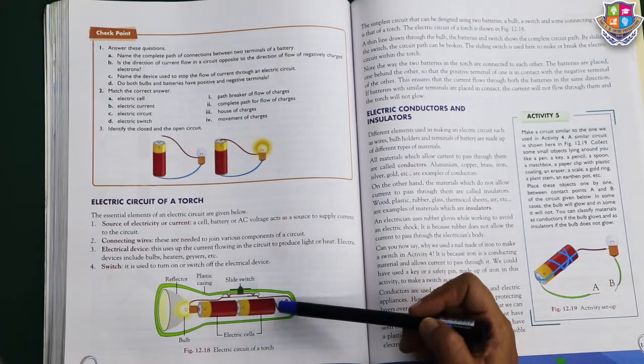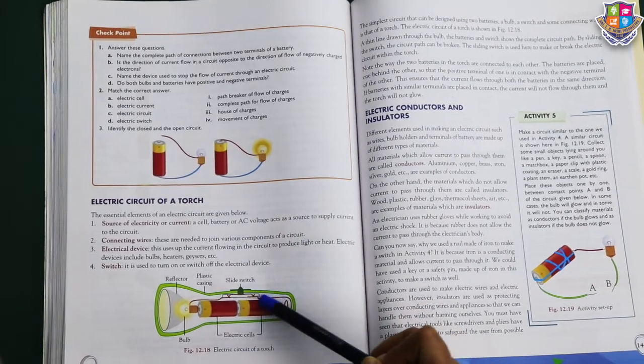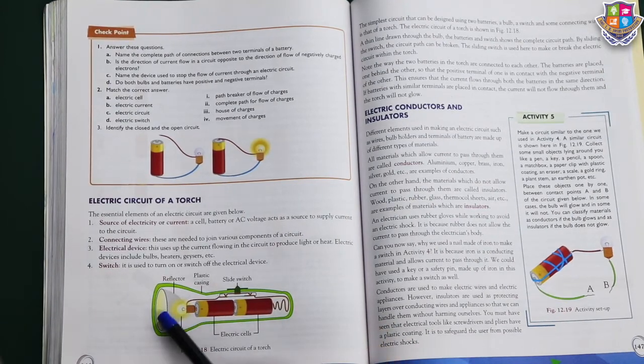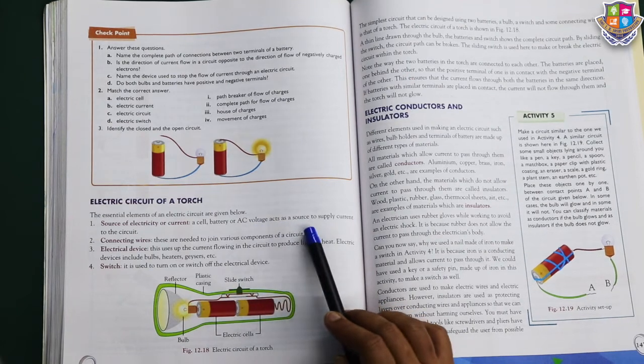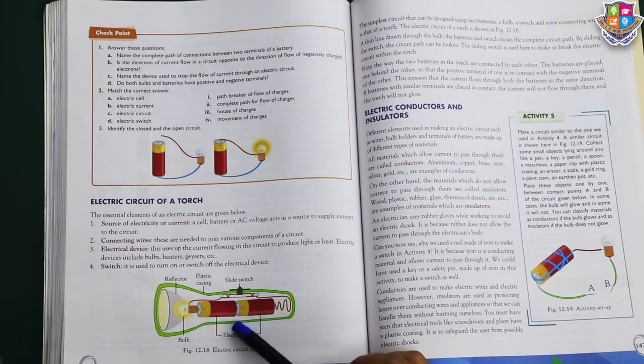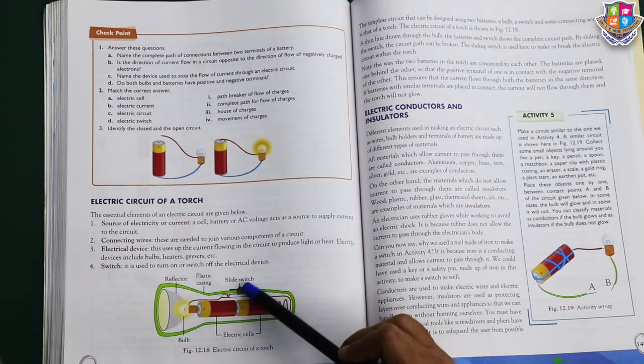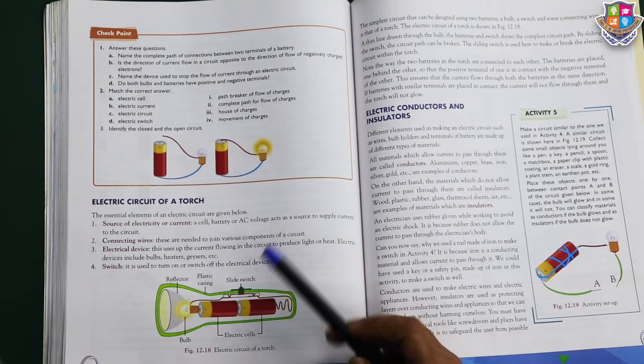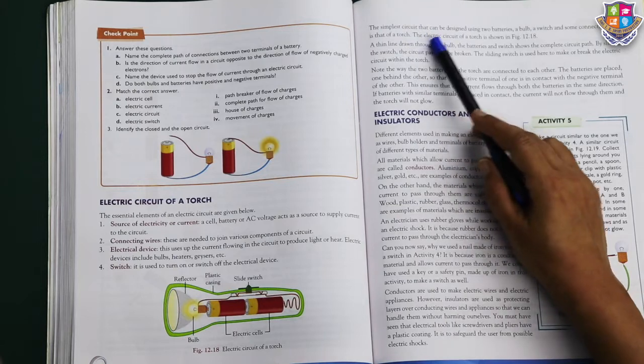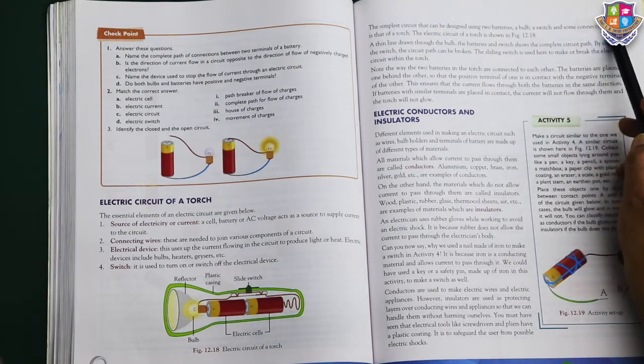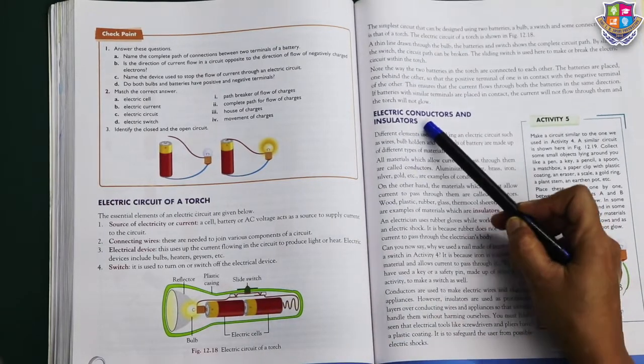Coming to electric circuit of the torch. We have already done this. How we have arranged the battery? The current will flow from positive to negative, then to this wire. And this wire will help in glowing the bulb. So we will get the light. Source of electricity of current is the cell or the battery. AC, alternating current, acts as the source to supply current to the circuit. Connecting wires are there. Electrical devices use up the current flowing in the circuit to produce heat or light. That is the bulb. And a switch. This is the switch which you turn off or on every time. These are the simple devices which you can see as the electric current can pass through it. The simplest circuit that can be designed using two batteries, a bulb, a switch, and some connecting wires is that of a torch. This is the end of this torch topic because there is a much important topic which I have to discuss, which is conductor and insulator.